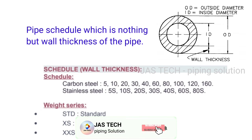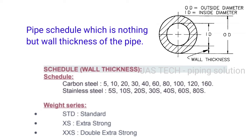Pipe schedule is nothing but the wall thickness of the pipe. Schedule numbers for carbon steel are: 5, 10, 20, 30, 40, 60, 80, 100, 120, and 160. For stainless steel: 5S, 10S, 20S, 30S, 40S, 60S, and 80S. Weight series designations are: Standard, Extra Strong, and Double Extra Strong.